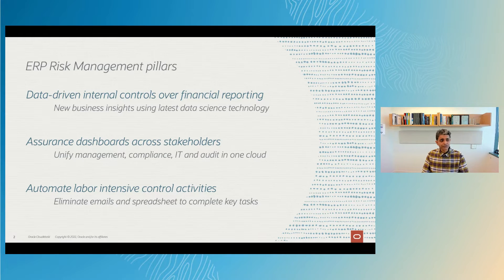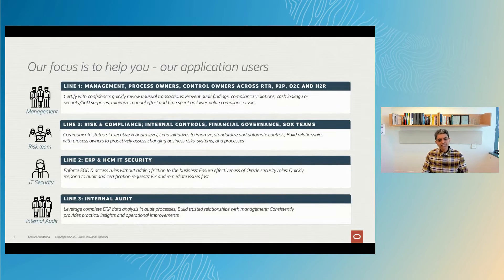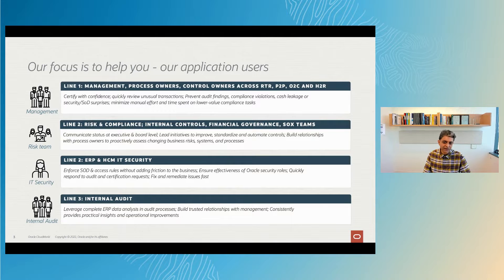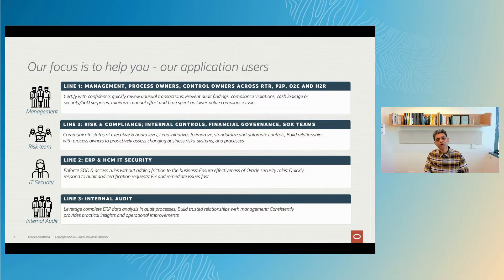A key pillar for risk management is to connect different groups with a shared assurance dashboard and simple workflows, because internal controls is really a shared responsibility. Risk Cloud is focused on helping each stakeholder to collectively build a more integrated system of internal controls. For example, the Procure2Pay process owner can certify their financial numbers with far more confidence by looking at dashboards that show the results of audit algorithms crunching data across all the transactions, setups, and configuration.